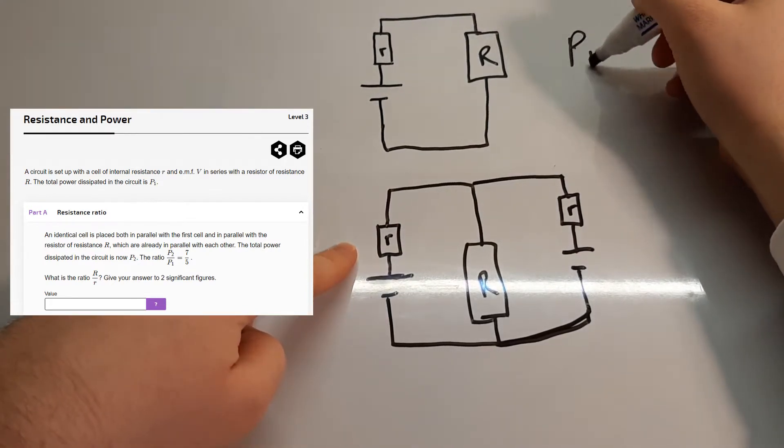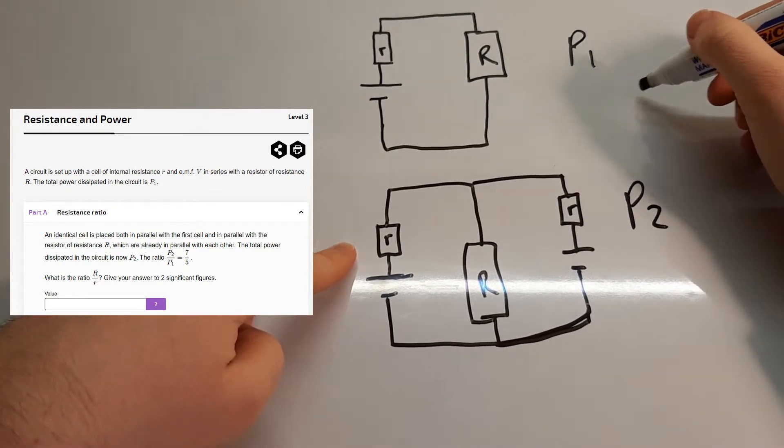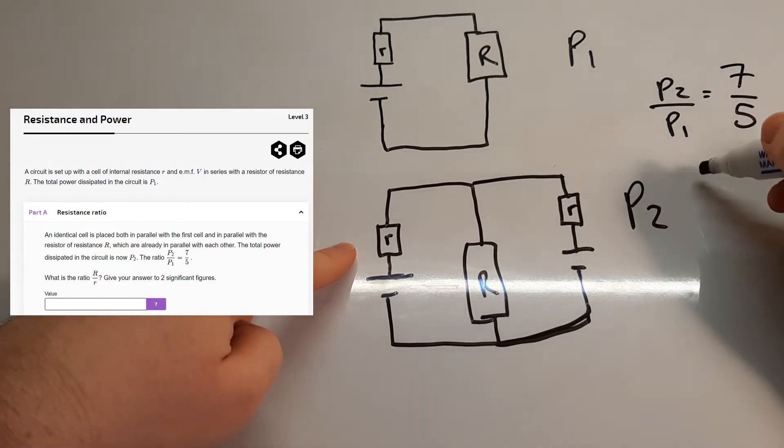Now they say, okay, you get power one coming out of this circuit, you get power two coming out of this circuit, and they say power two over power one is equal to seven over five. And then they ask, what is the ratio between R, capital R over little r?